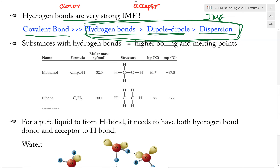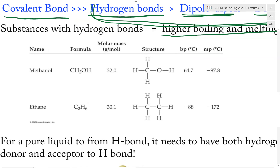Of these three types of IMF, Hydrogen bonding is much stronger than the other two. Substances that can make Hydrogen bonds would have very high boiling points, high melting points, high viscosity, and other elevated physical properties as well. Let's take a look at some data to make sure this point is well understood. We have two examples: methanol and ethane.